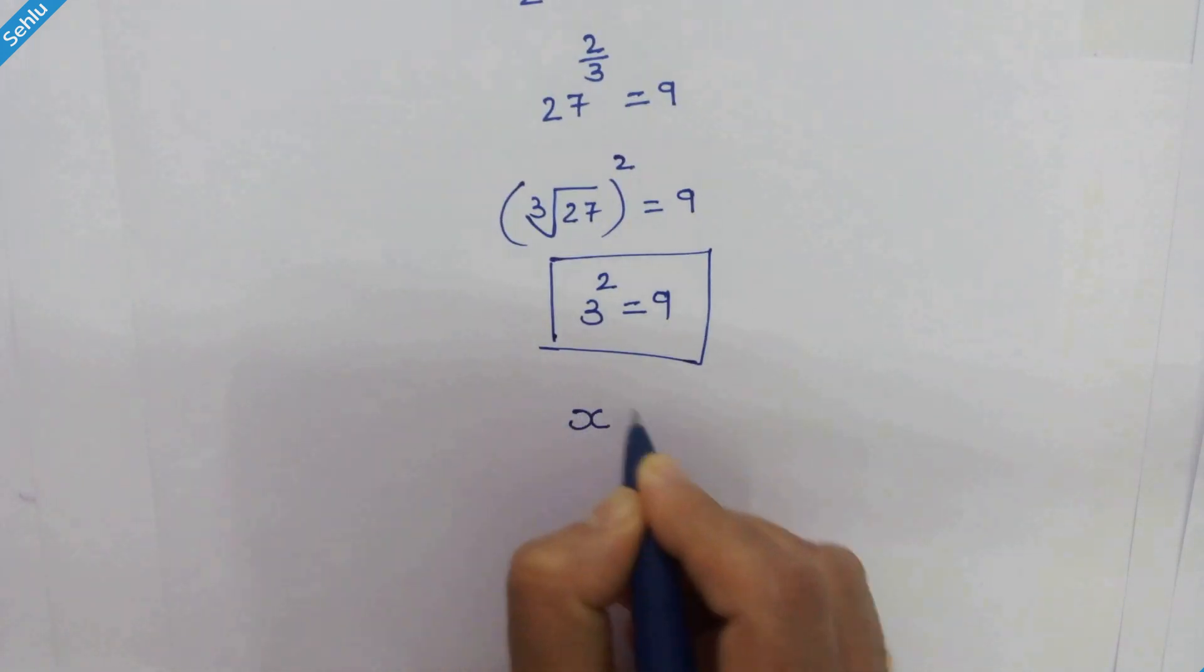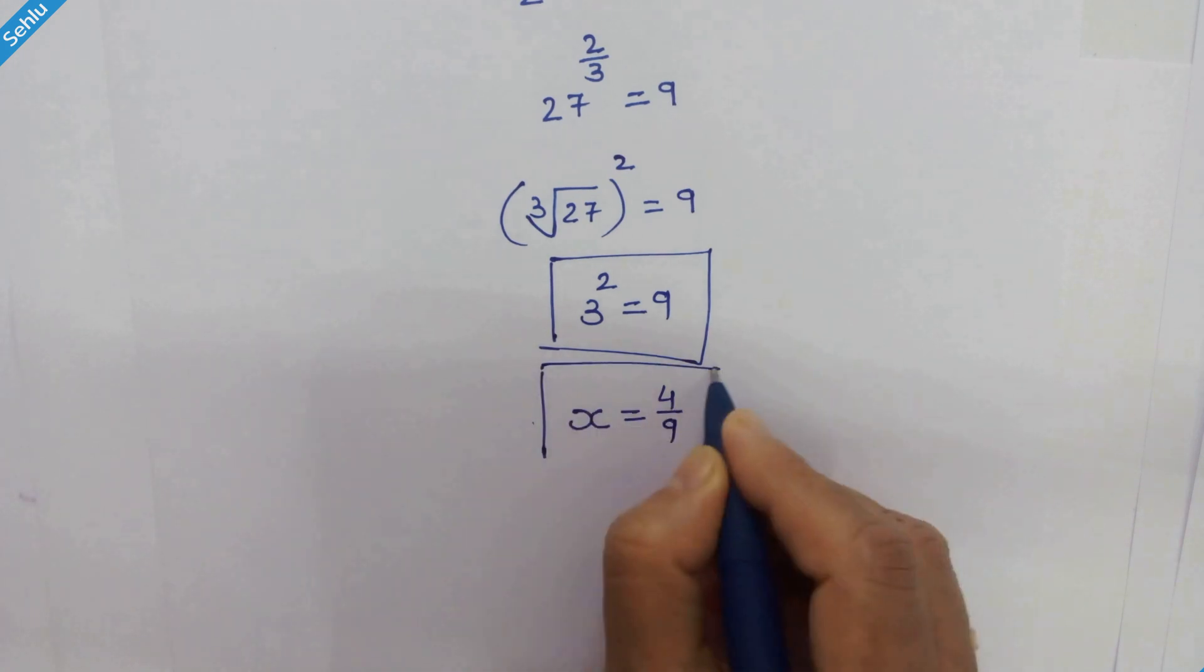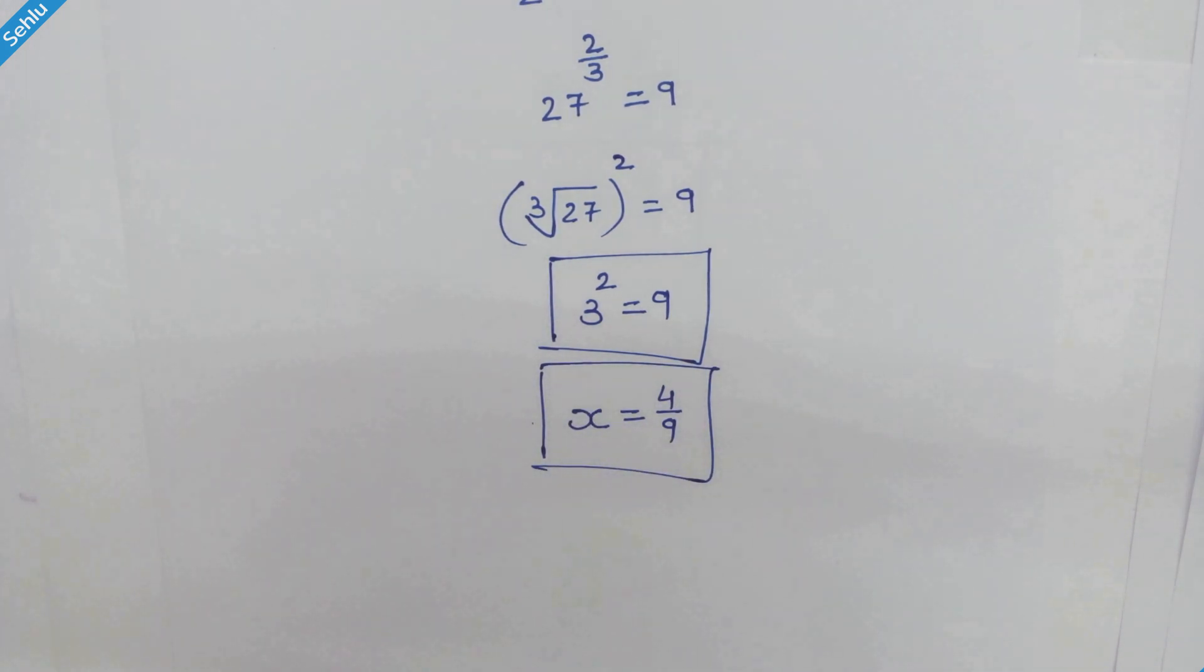So x equals 4 upon 9 is the correct answer. Thanks for watching. Don't forget to subscribe. We'll meet in the next video. Bye-bye.